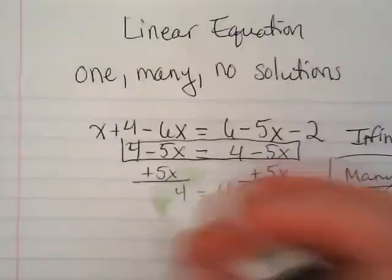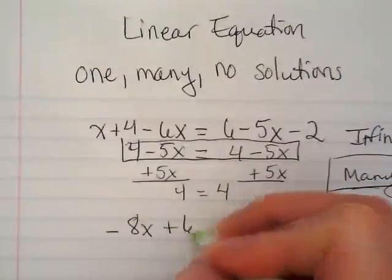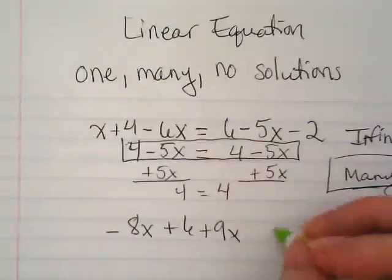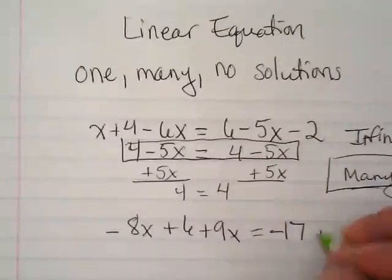Let's try this problem. Negative 8x plus 6 plus 9x is equal to negative 17 plus x.